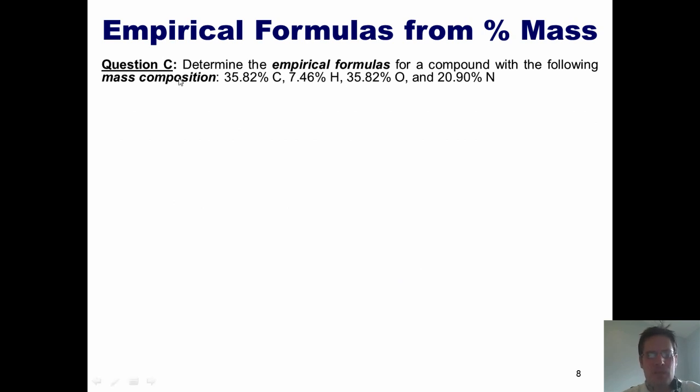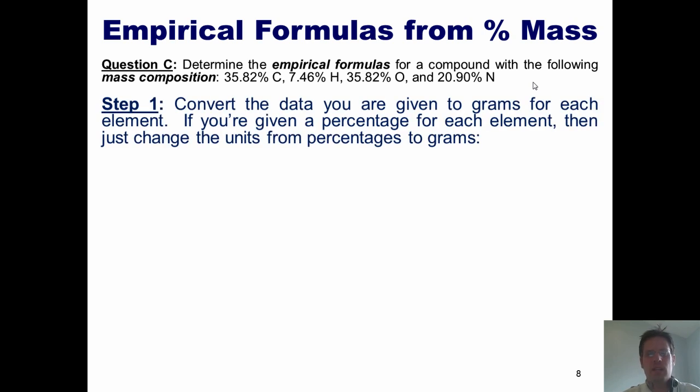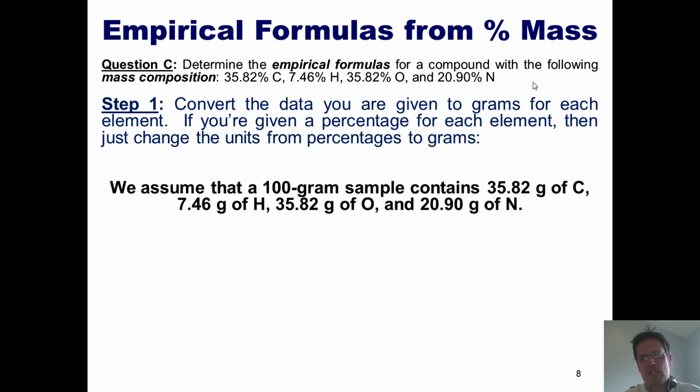We've now been given a percent mass composition of 35.82% carbon, 7.46% hydrogen, 35.82% oxygen, and 20.90% nitrogen. What's the empirical formula? Step one, convert everything to grams. So all I really have to do is just take the percent signs and replace them with grams. So if I had a 100-gram sample, I'd assume 35.82 grams of carbon, 7.46 grams of hydrogen, 35.82 grams of oxygen, and 20.90 grams of nitrogen. We're done with step one.